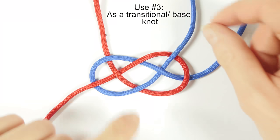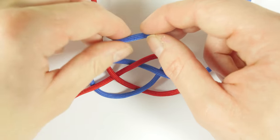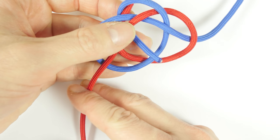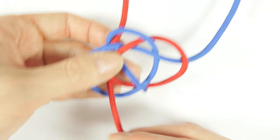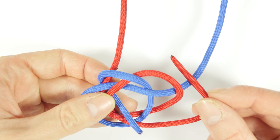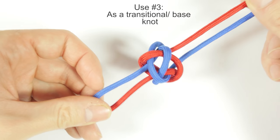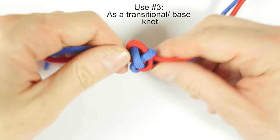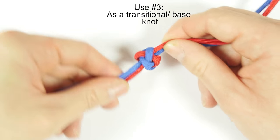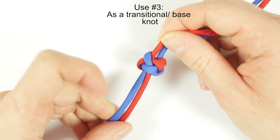For example, here you would take the top tail end, go past this strand, then under and through the middle. Then pull on all of the ends to tighten up, and what you're going to get is the Lanyard Knot. One of the most essential knots that you use in your paracord crafts.